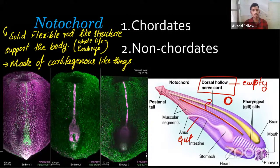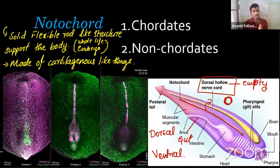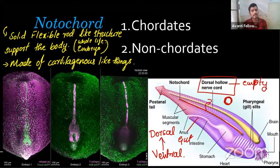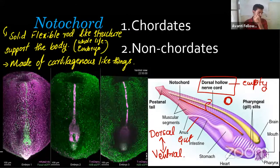Dorsal means the upper portion and ventral means the lower portion. If you kept a fish like this, the above portion is dorsal and the below portion is ventral. The nerve cord is present above the notochord — that's why it's called the dorsal nerve cord. Don't imagine ourselves standing upright; imagine us like other animals on four legs, so dorsal and ventral become easy.